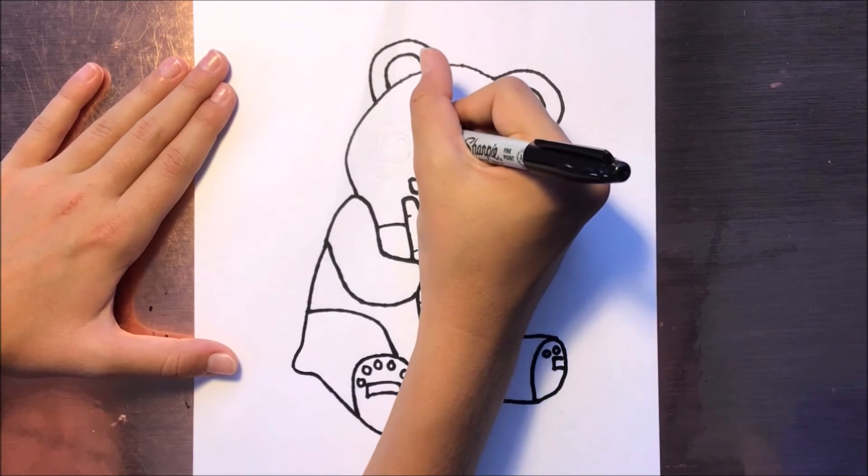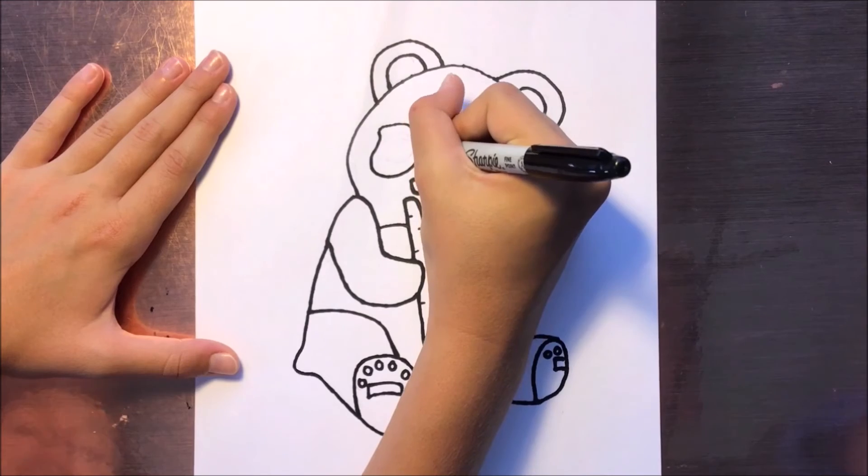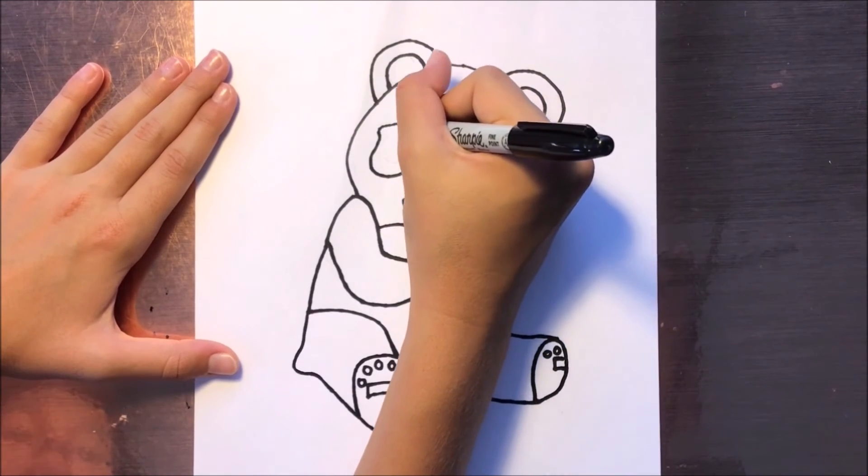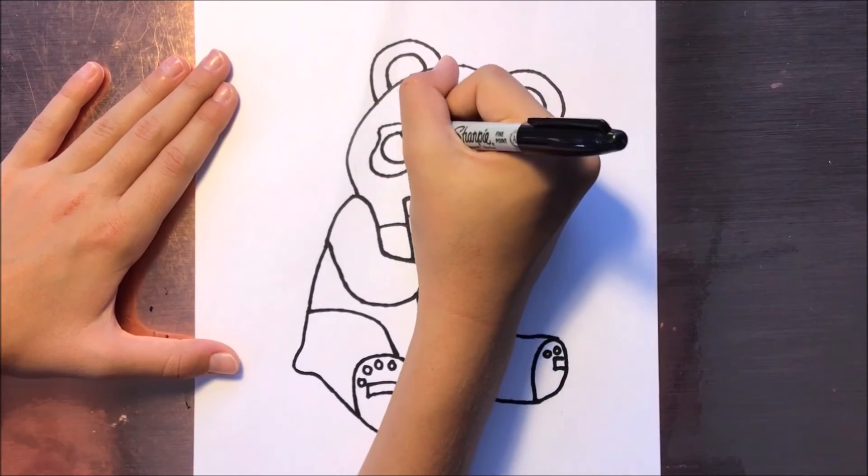Now let's do the other side—a big nut shape as a patch. Now the eye and a big circle.